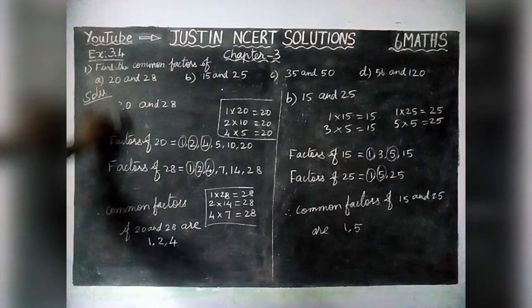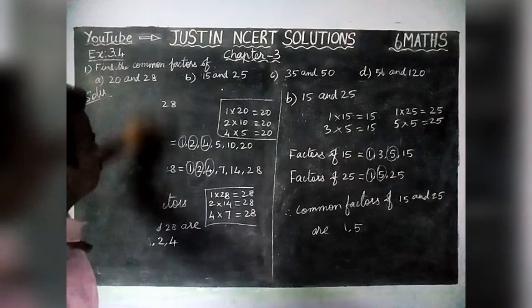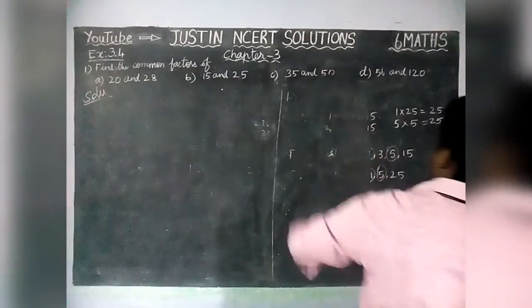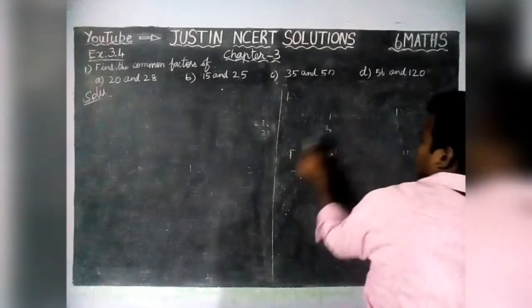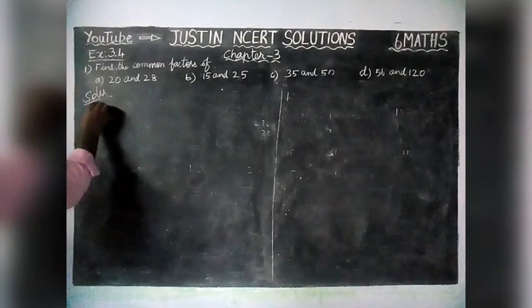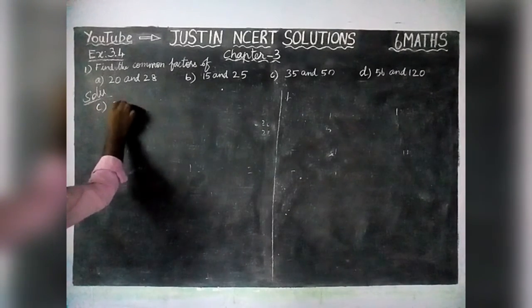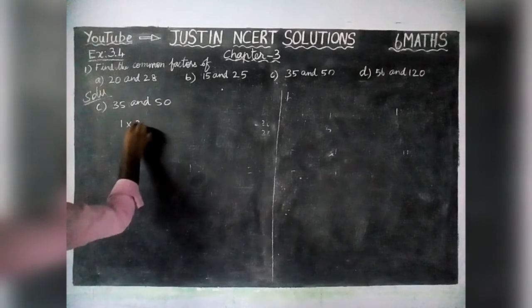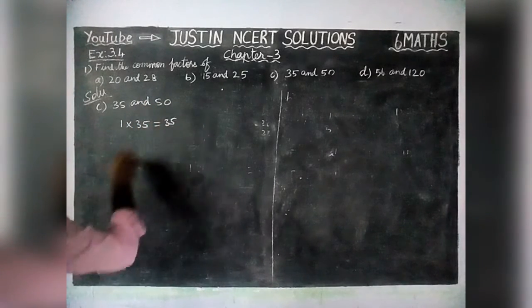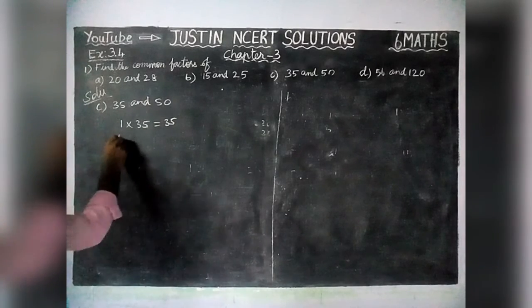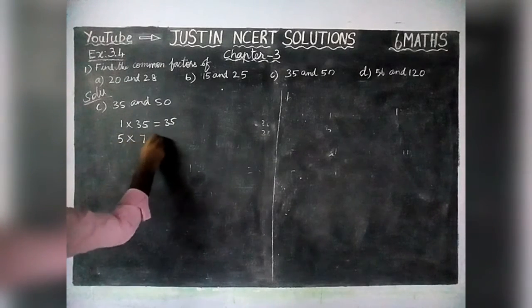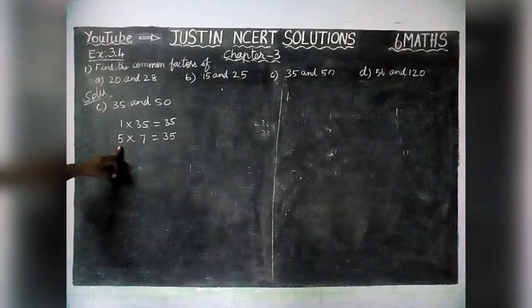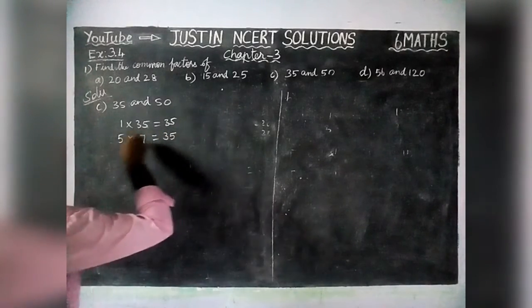Next, we are going to find Part C: 35 and 50. 1×35 is 35, 2, 3, 4 will not come, 5 only will come — 5×7 is 35. We don't have any other factors.